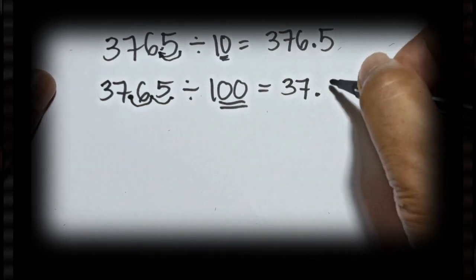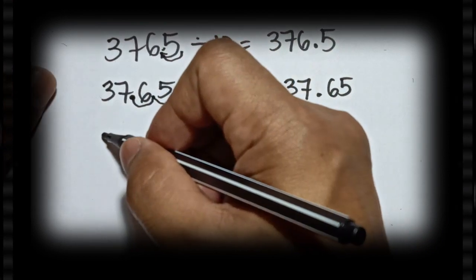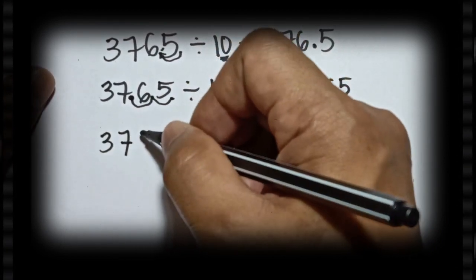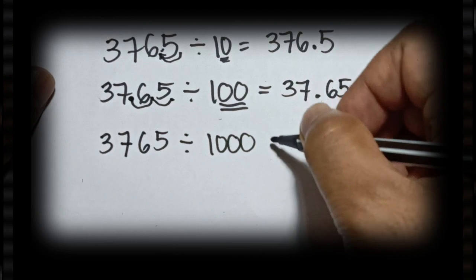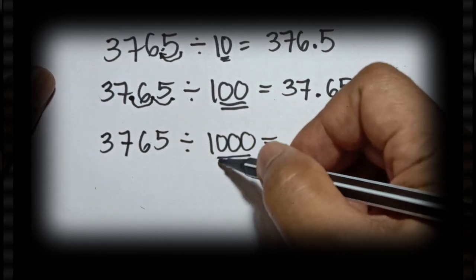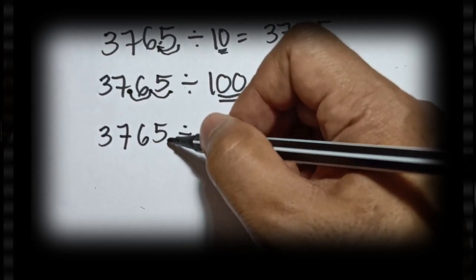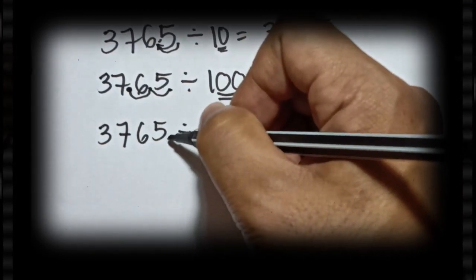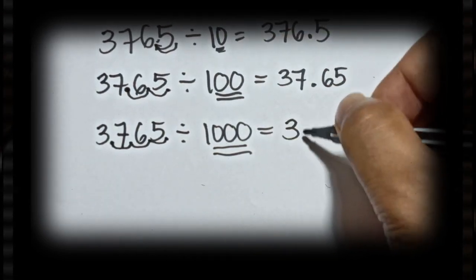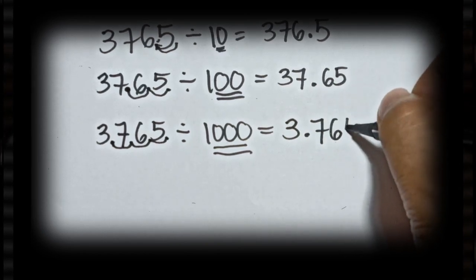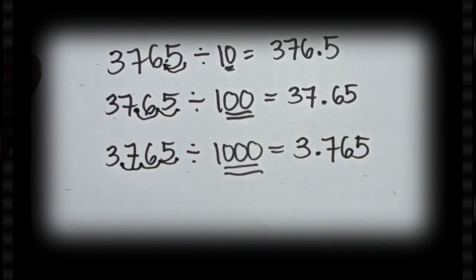And lastly, 3,765 divided by 1,000: in 1,000 you have three zeros, and the decimal point of 3,765 is at the right side of the last digit. So you move the point to the left three times — one, two, three — and the answer is 3.765. That is the quickest way to divide a whole number by 10, by 100, or by 1,000.